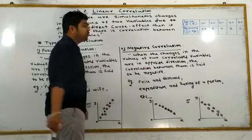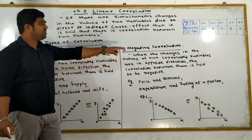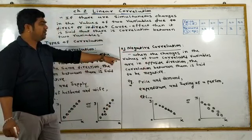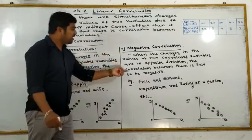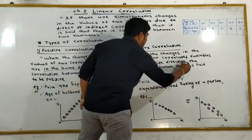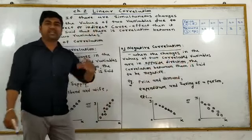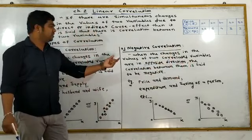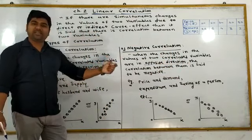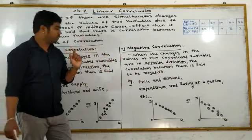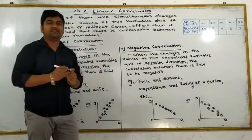Negative correlation: when the changes in the values of two related variables are in the opposite direction. Changes overlap in the opposite direction between this order — the correlation between them is said to be negative. For example, price and demand.